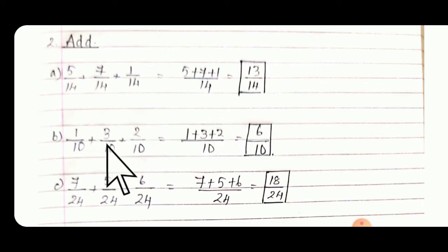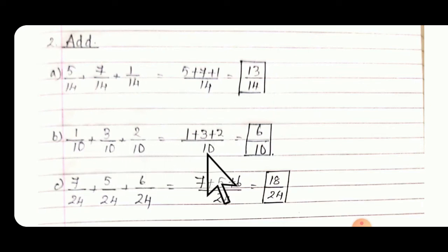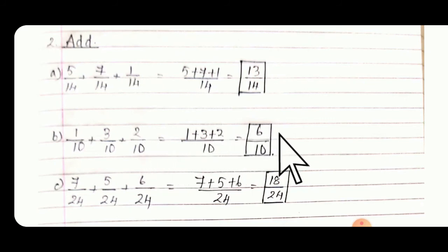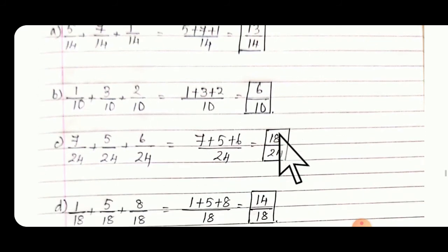Similarly B: 1/10 + 3/10 + 2/10. Denominator is 10. Numerators are 1, 3 and 2 — if you add them it becomes 6/10.